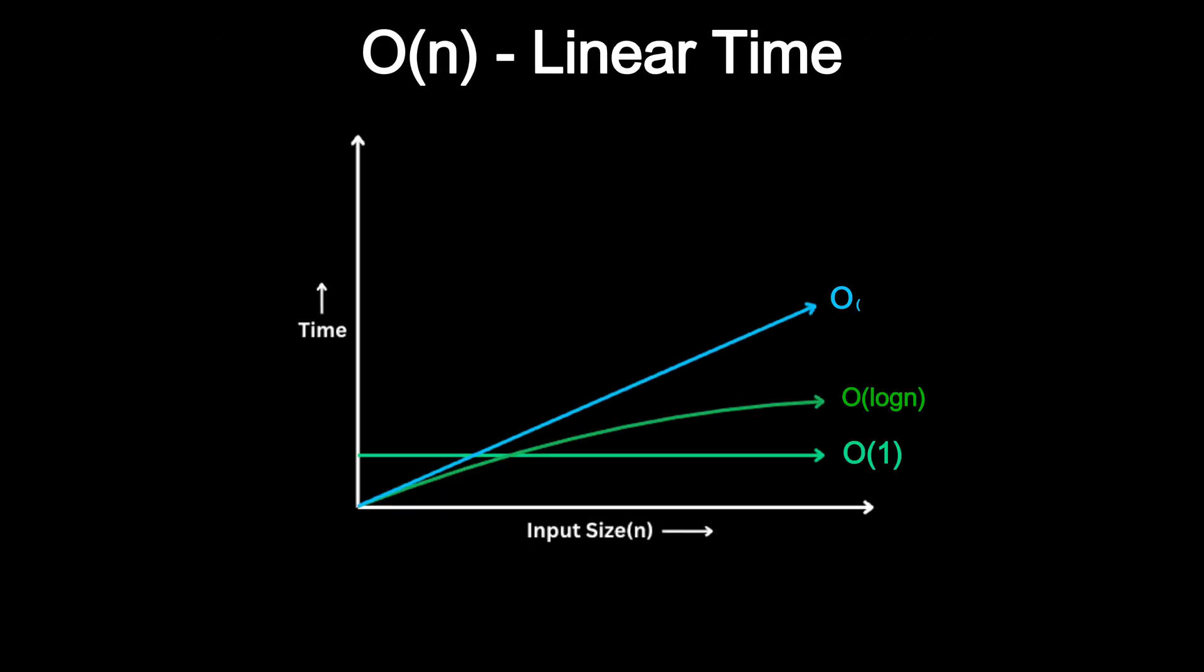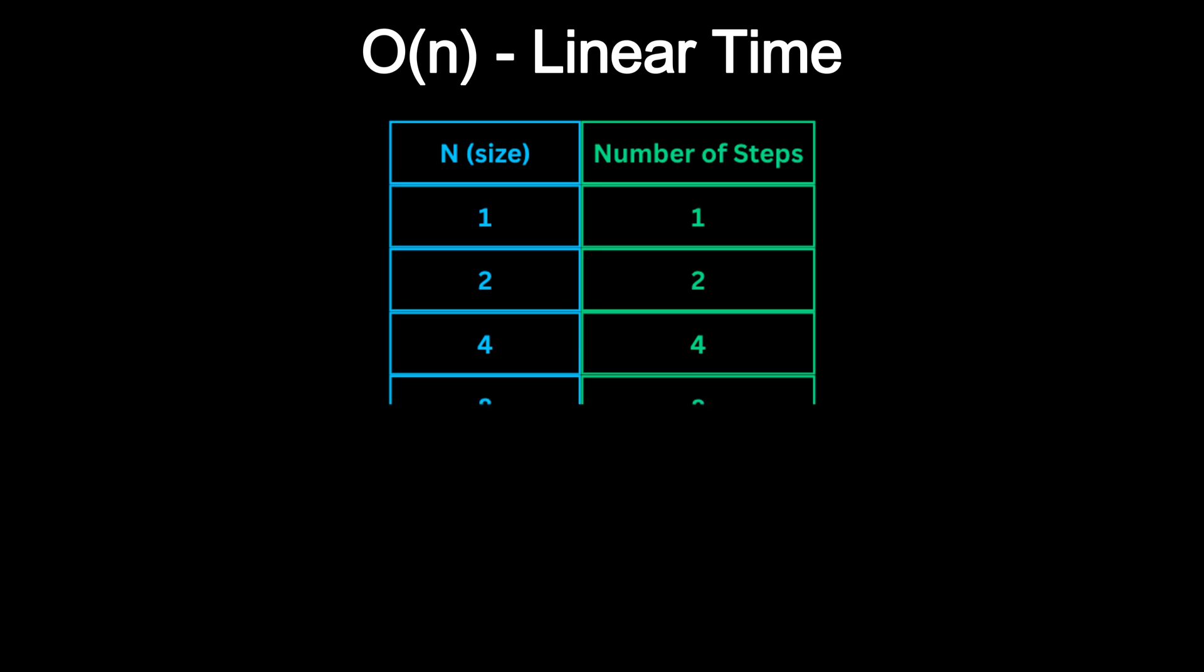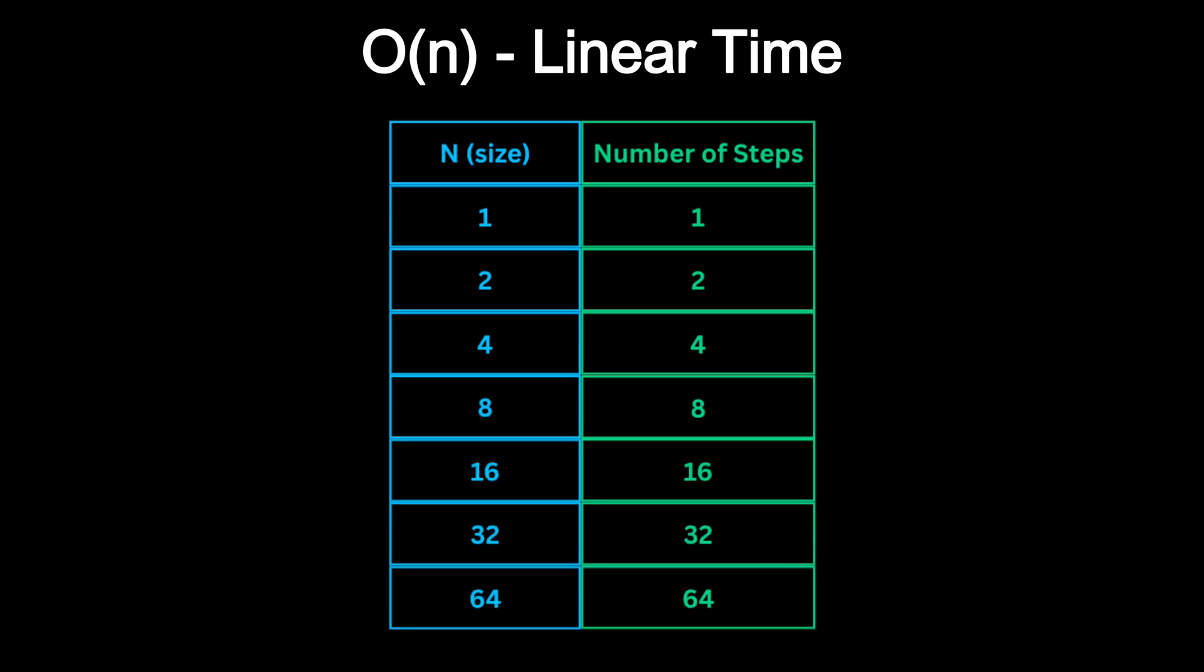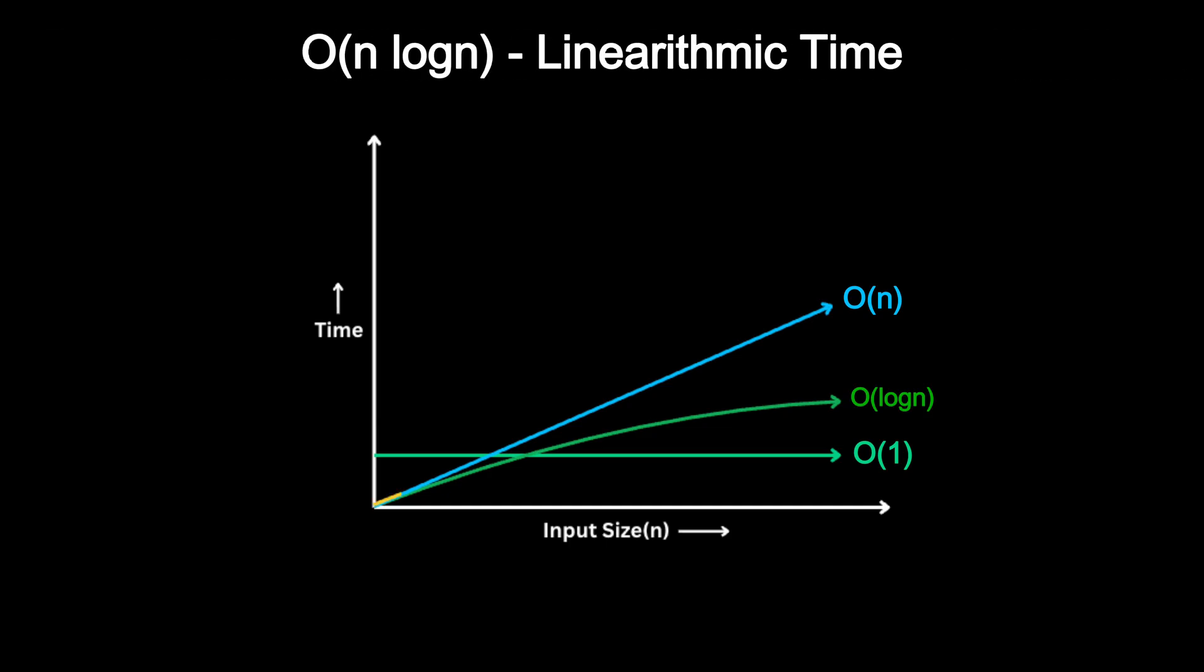Now let's talk about linear time or O(n). An algorithm is O(n) when its running time grows directly in proportion to the size of the input. If the input doubles, the number of operations also doubles. A simple example is finding the maximum value in an array. You start with some initial max, then you scan every element and compare it to the current max. Each comparison is O(1), but you do it N times, so the overall time complexity becomes O(n). Any algorithm that visits every element exactly once is linear time.